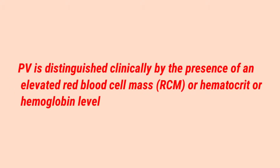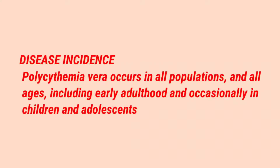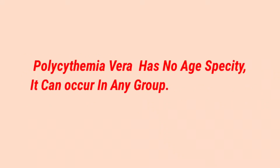Polycythemia is distinguished clinically by the presence of elevated red blood cell mass, hematocrit, or hemoglobin levels. Polycythemia occurs in all populations and all age groups, including early childhood and occasionally in adolescence — there is no specific age group affected.